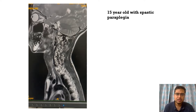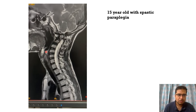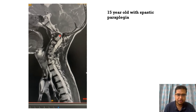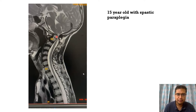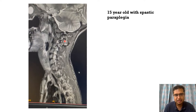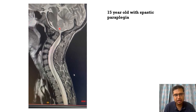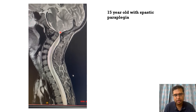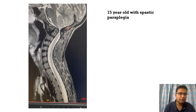Starting with my first case: a 15-year-old boy who came with spastic paraplegia. These are the T2-weighted sagittal images of the cervical spine, where we can see the tip of the odontoid is actually above the foramen magnum, compressing the cord and causing severe narrowing and signal change. There is no tonsillar herniation as such.